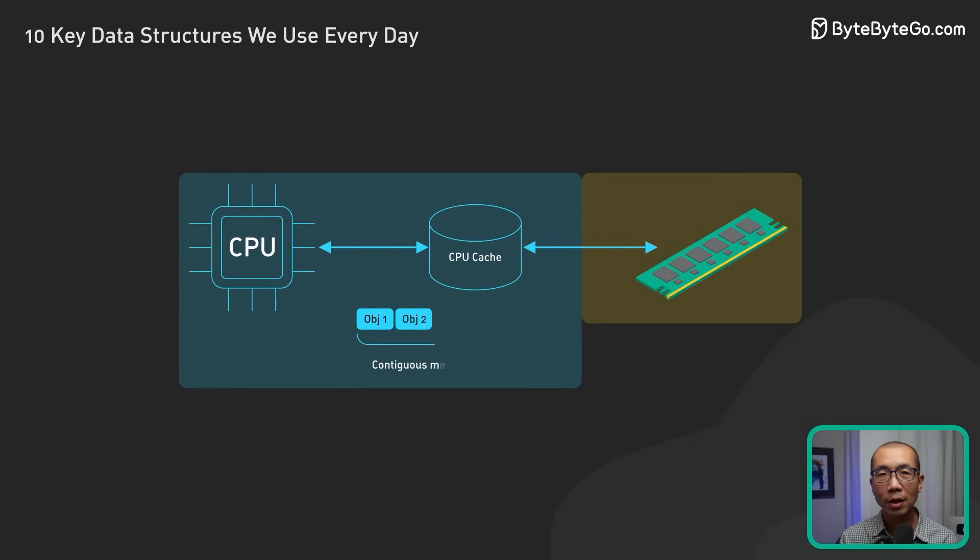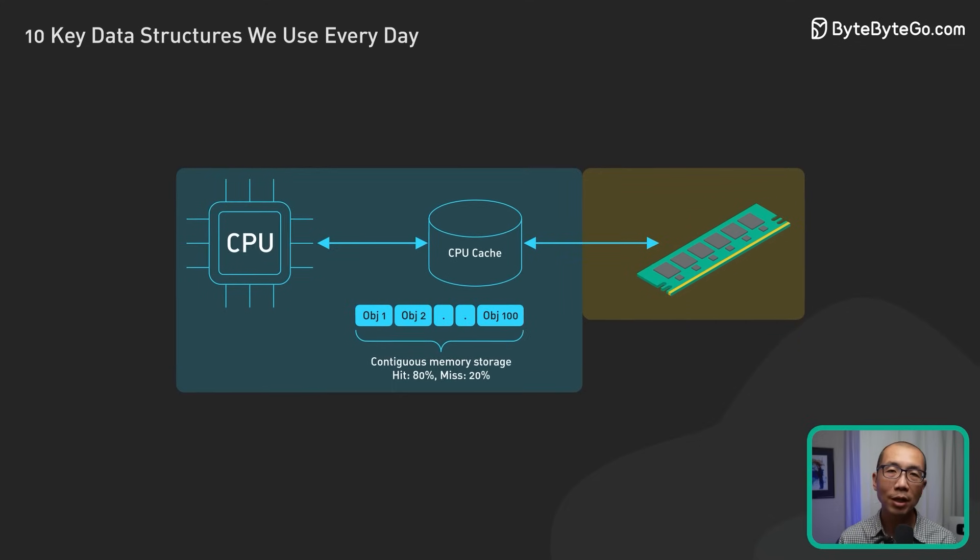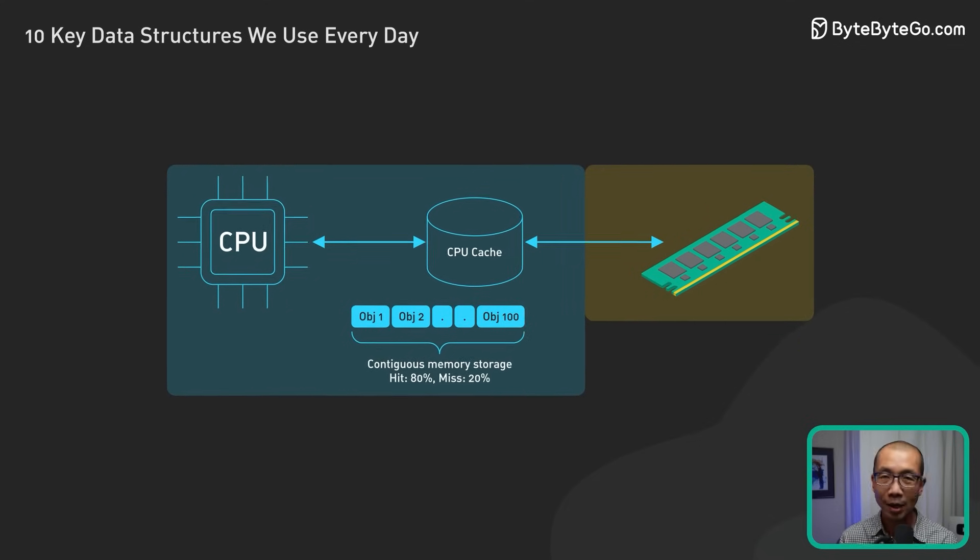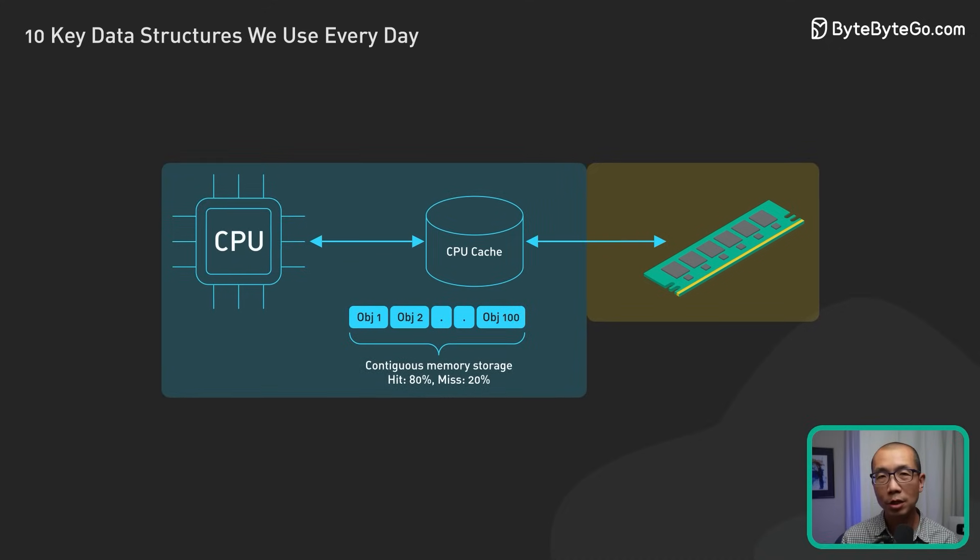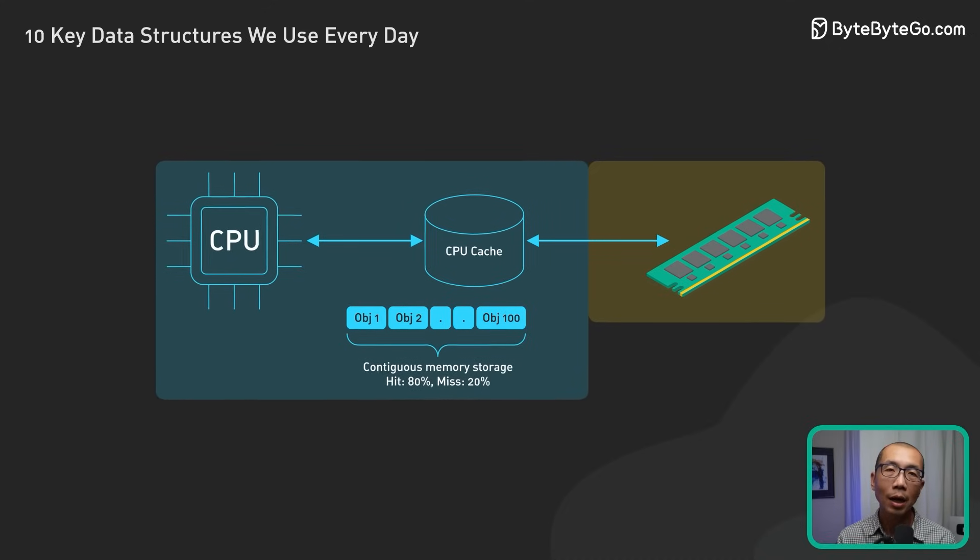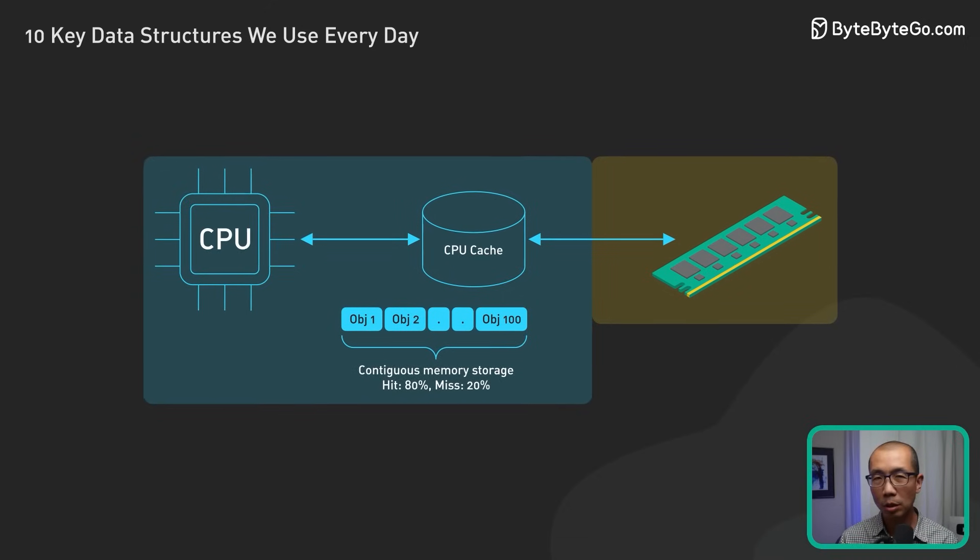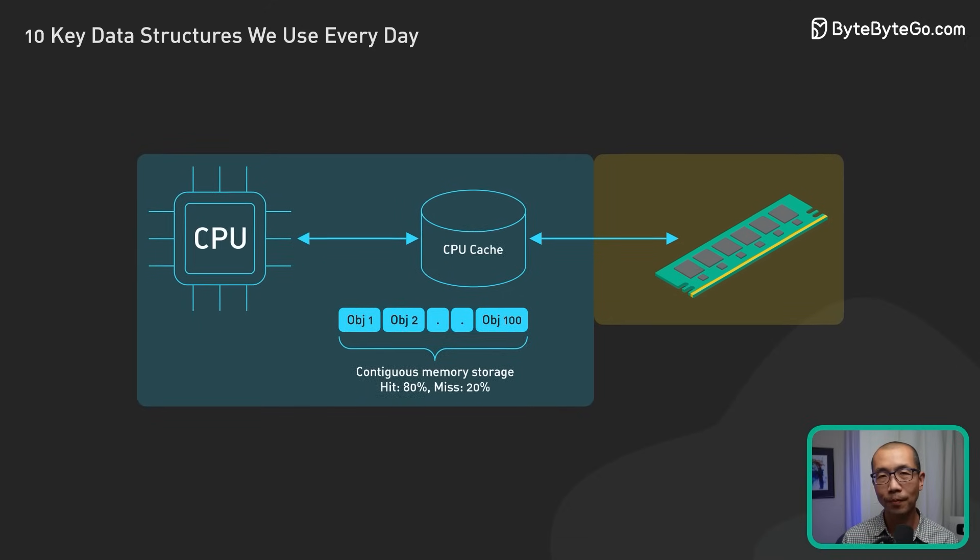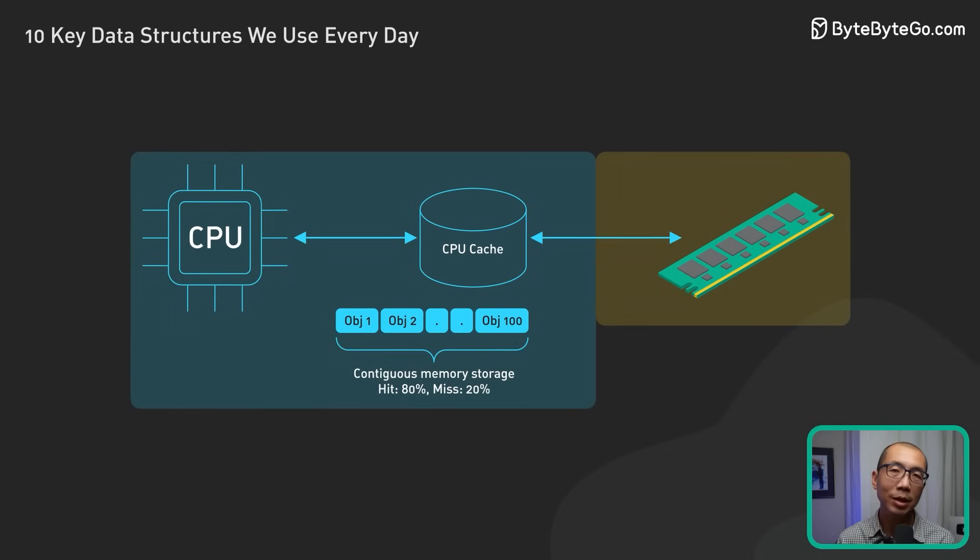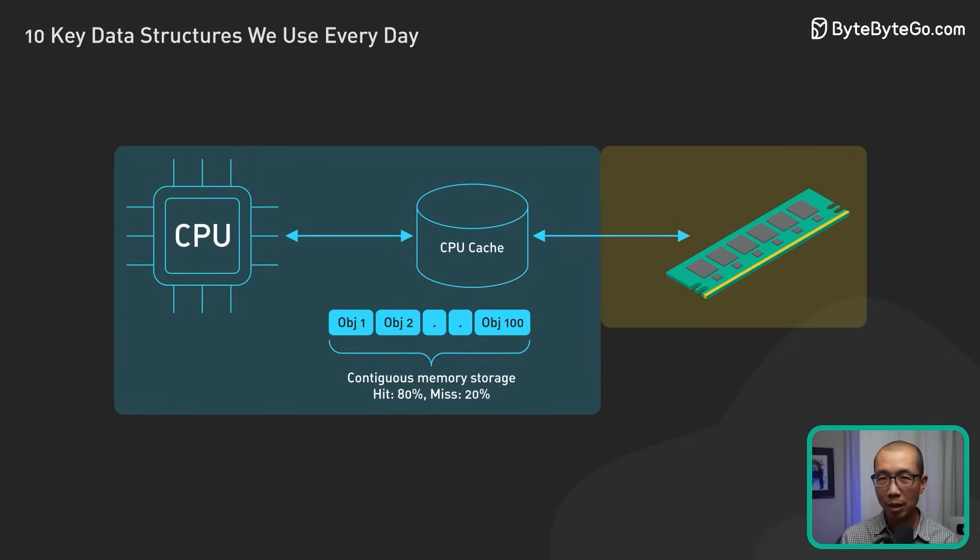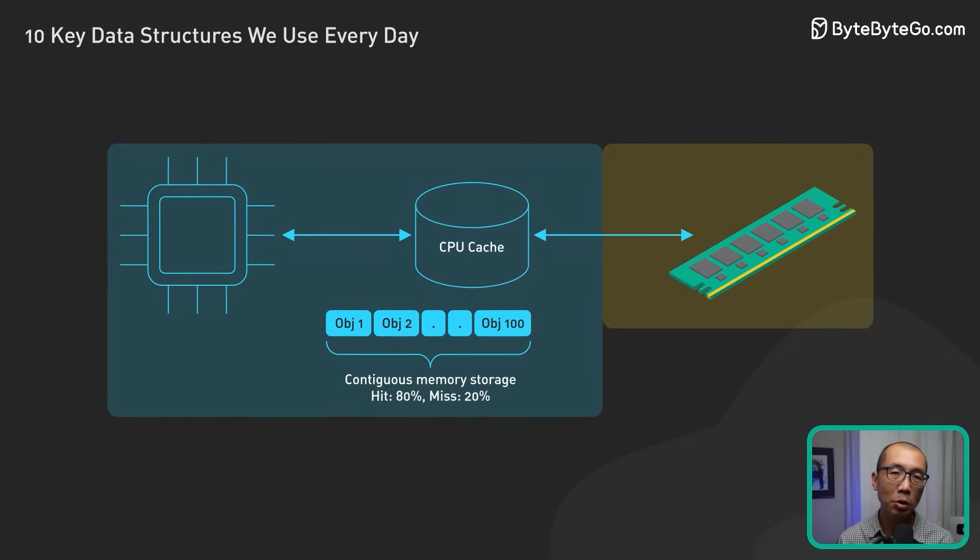Now different data structures have varying levels of cache friendliness based on how their elements are stored in memory. Contiguous memory storage, like that in arrays, allows for better cache locality and fewer cache misses, resulting in improved performance. When an array element is accessed, the cache can prefetch and store nearby elements, anticipating that they might be accessed soon.